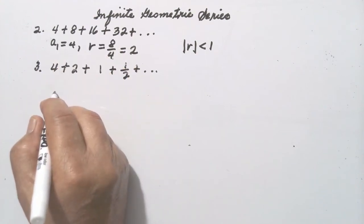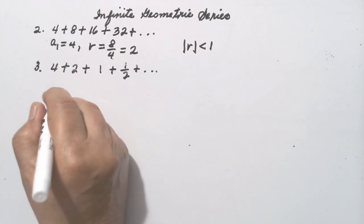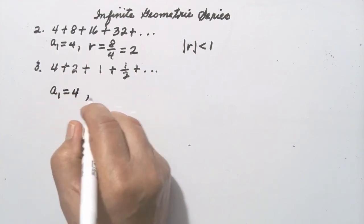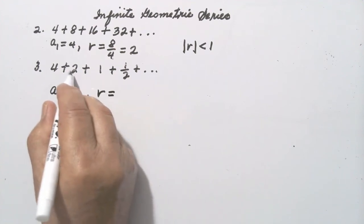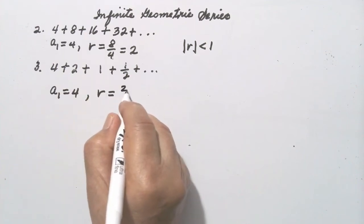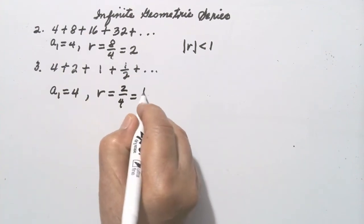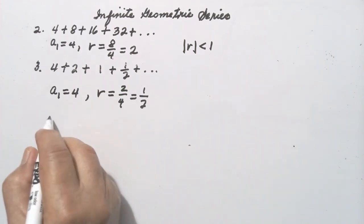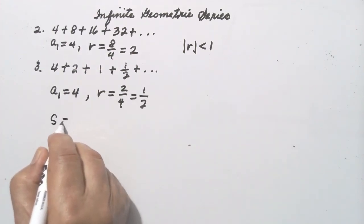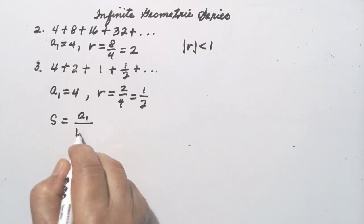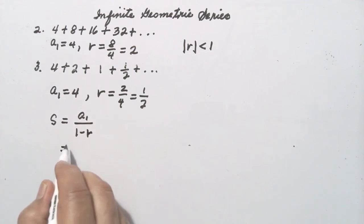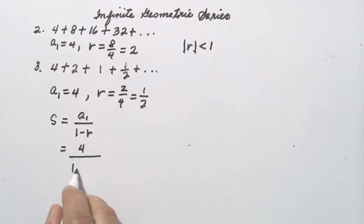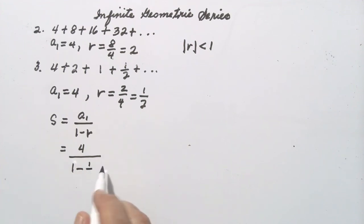Let's go to number 3. The first term in this series is 4, so a sub 1 is 4. The common ratio is 2 over 4 — that is the second term over the first term — and this is 1/2. The absolute value of 1/2 is less than 1, therefore we can apply the formula. S is equal to a sub 1 over 1 minus r, so a sub 1 is 4 over 1 minus r, where r is 1/2.